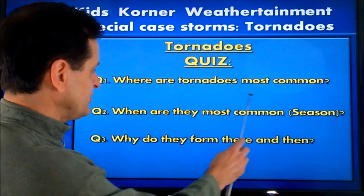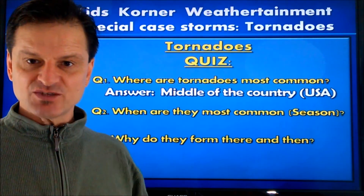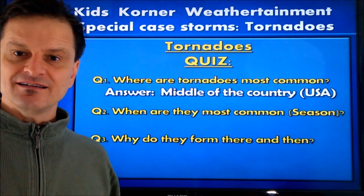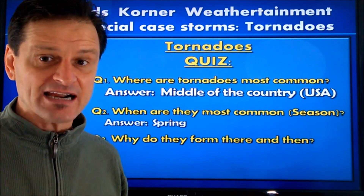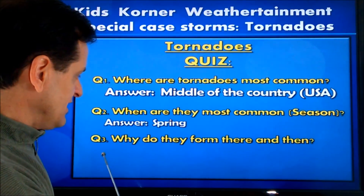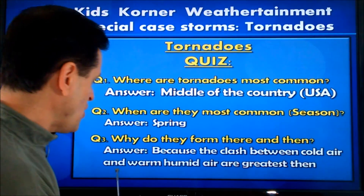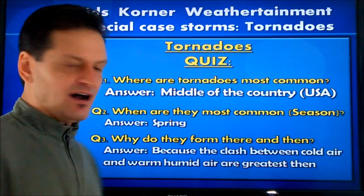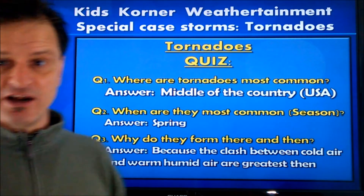Here are your answers. Where do tornadoes show up most commonly? In the middle of the country, because that's where the warmest and the coldest air meet. When are they most common? Springtime — it's a transitional season when there's still cold enough air from Canada, but warm air is beginning to move up from the equator and the south, and that's where they meet. Why do they form when and where they do? Because the clash between the cold air and the warm air is greatest in the springtime in the middle of the country. And if those conditions are present elsewhere, like in central New York, they can form a tornado there as well.